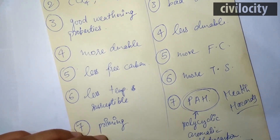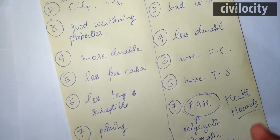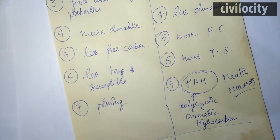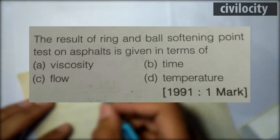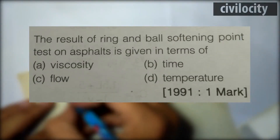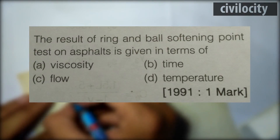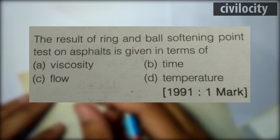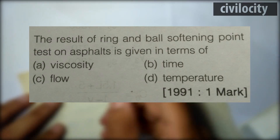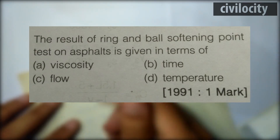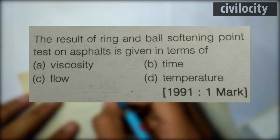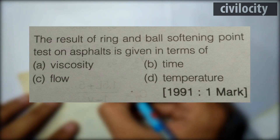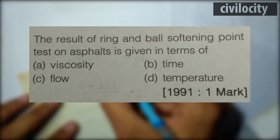Now let's discuss some previous year GATE questions. This question says: 'The result of ring and ball softening point test on asphalt is given in terms of — viscosity, time, temperature, or flow?' We do the softening point test to find out the temperature susceptibility of a particular bitumen material. Higher the softening point, lower the temperature susceptibility; and lower the softening point, higher the temperature susceptibility.